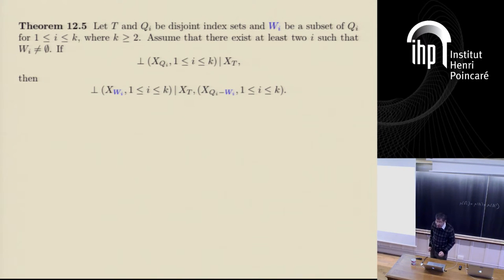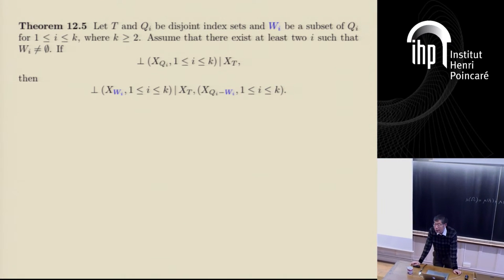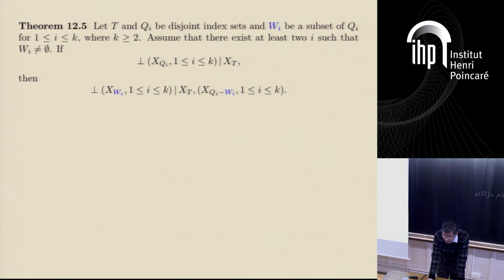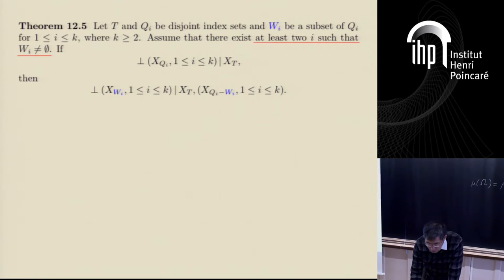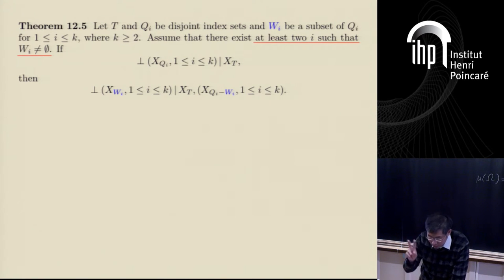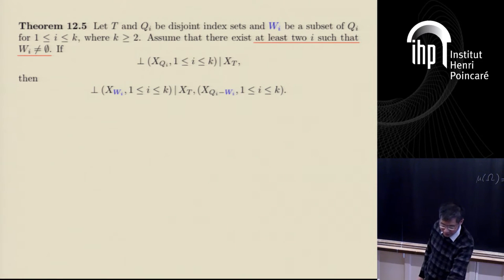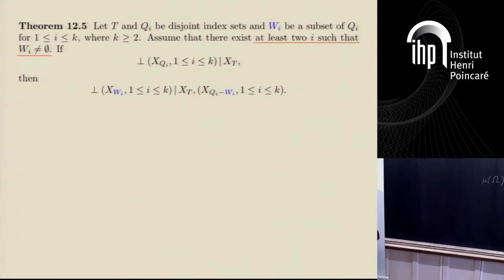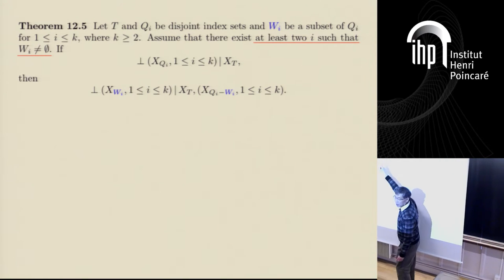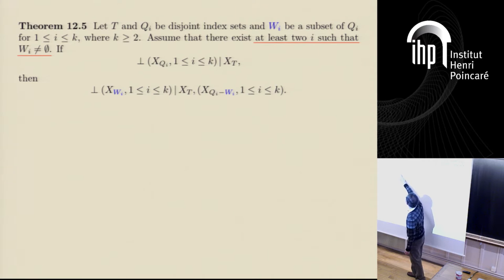Let's take a look at this theorem. Let T and Qi be joint index sets, and Wi be subsets of Qi, for i from 1 up to k, where k is greater than or equal to 2. Assume that there exist at least two i's such that Wi is non-empty. Wi is a subset of Qi, and at least two of the Wis are non-empty. Suppose we have — I'm going to draw a picture — assume that conditioning on XT, all these XQi are mutually independent.